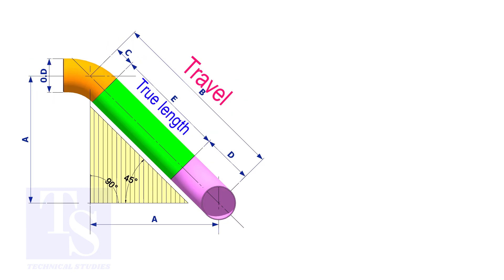Assume that the elbows are short radius. Nominal pipe size is 4 inch. The travel length is 1500 millimeters. The joint gap is 3 millimeters. Calculate the true length of the spool.